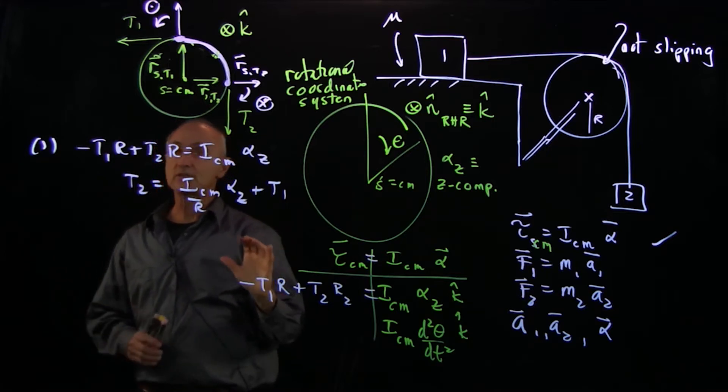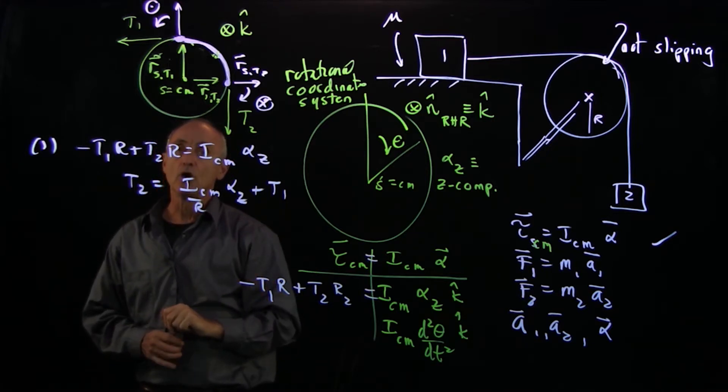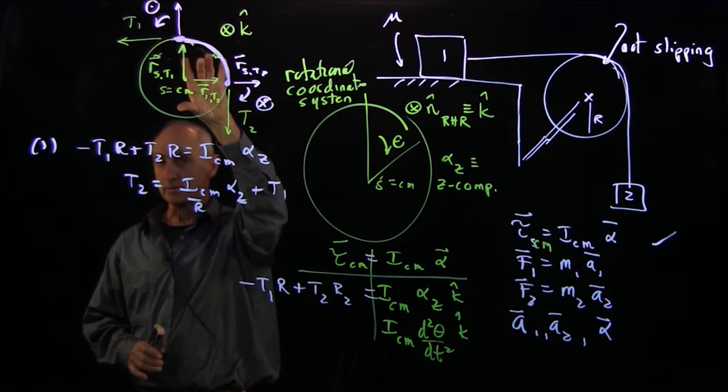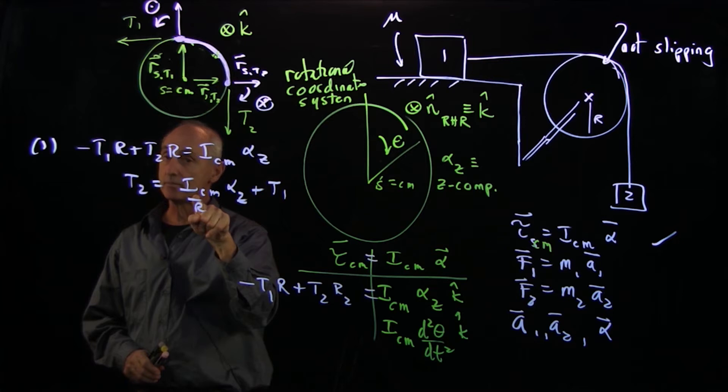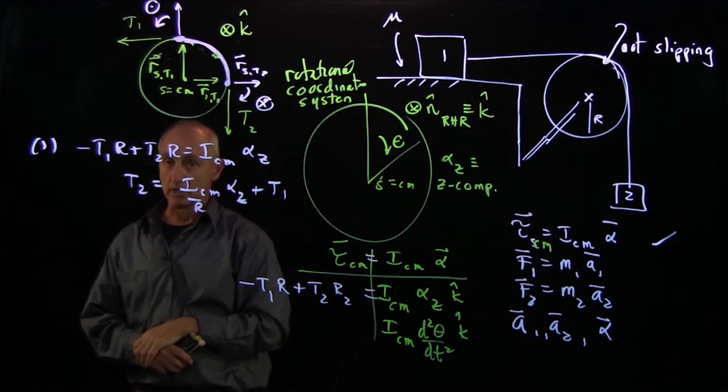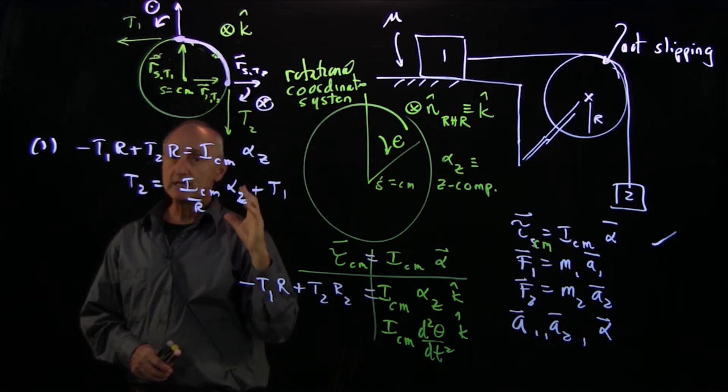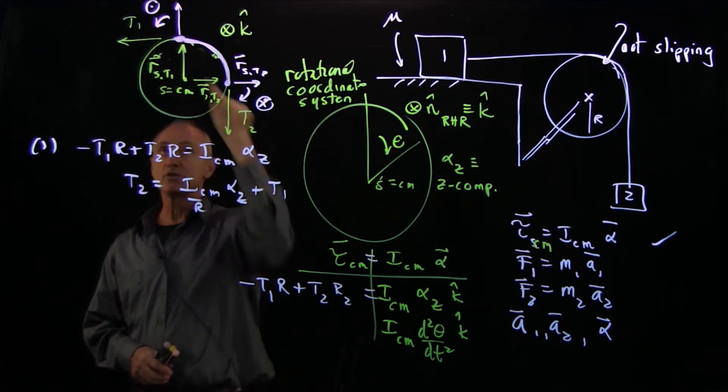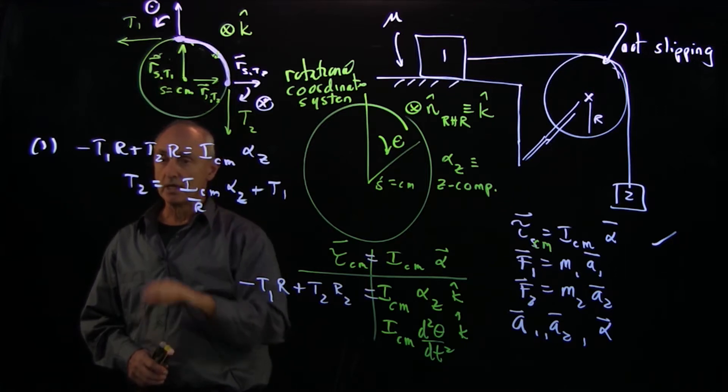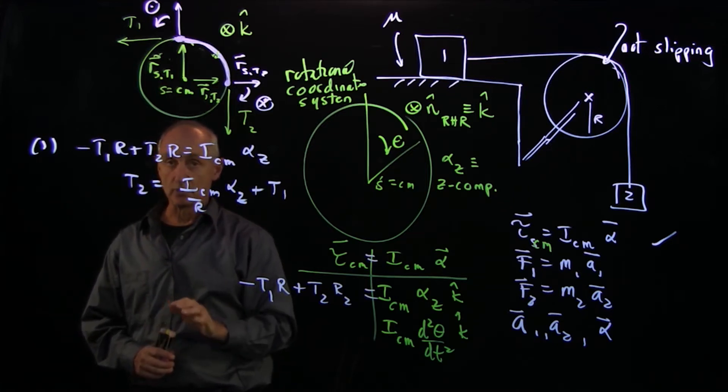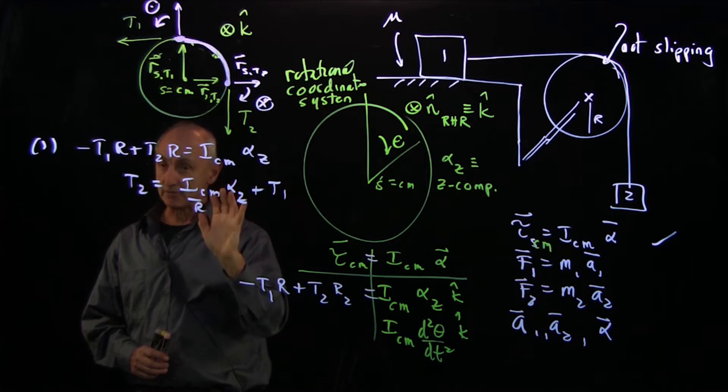We also could make a slightly different statement. We could say, suppose the mass of the pulley were very, very small, an extremely light pulley. Then ICM would be zero, and again T2 would be equal to T1. So when we were dealing with either massless pulleys or ropes that were slipping frictionlessly along the pulley, the tension on both sides was equal. Now something different is happening.